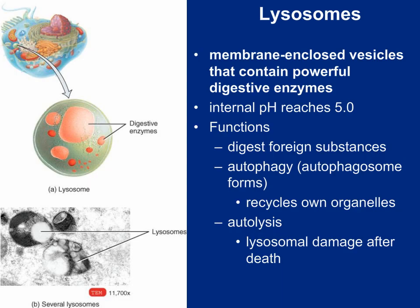Our next organelle is the lysosome — a membrane-enclosed vesicle containing powerful digestive enzymes. Basically it's like a cellular stomach, and its purpose is to digest large molecules and break them up for use inside the cell or to be gotten rid of. The internal pH can become quite acidic, around 5.0. Lysosomes serve to get rid of foreign substances that enter the cell and perform the process of autophagy — self-digestion — where worn-out organelles are broken down. The lysosome acts like a garbage man, chopping up old organelles and recycling their components.